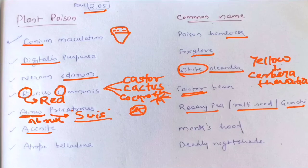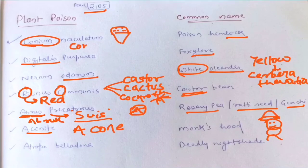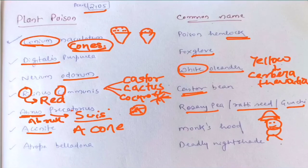Then aconite — separate the word as 'a cone.' Where do you put a cone? On a monk's head. So here is a monk and you put a hood on its head — that's aconite, or monkshood. To avoid confusion with conium: for conium there are many cones that you lock away, but here it is only one cone — a cone — because you can only put one single hat on a head.